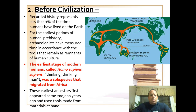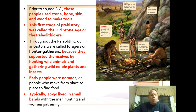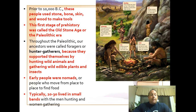Prior to the Agricultural Revolution, people were hunter-gatherers. Archaeological records indicate that the first modern humans, Homo sapiens sapiens, moved out of Africa and migrated throughout the world to populate it. One of the most important dates is 10,000 BC, because after that we see people begin to use domesticated plants and animals. But prior to that, people were nomadic because they moved frequently due to their food source.